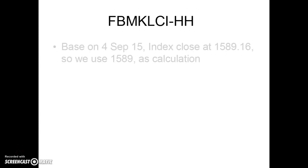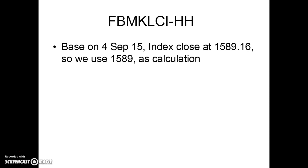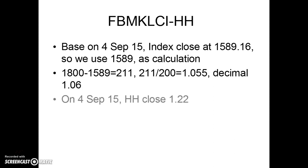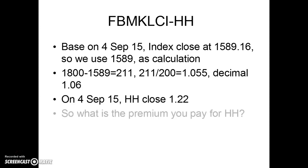For HH, based on 4th September the index closed at 1589.16, so we use 1589 for calculations. The formula is: exercise price minus index price = 1800 minus 1589 = 211. Then 211 divided by the exercise ratio of 200 gives 1.055, which we round to 1.06.